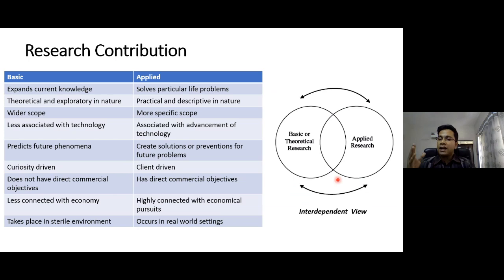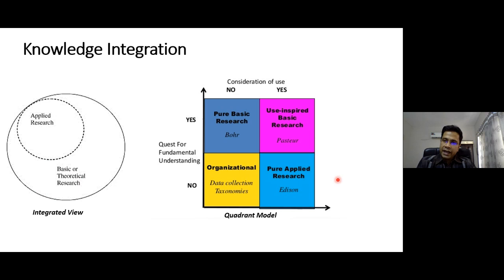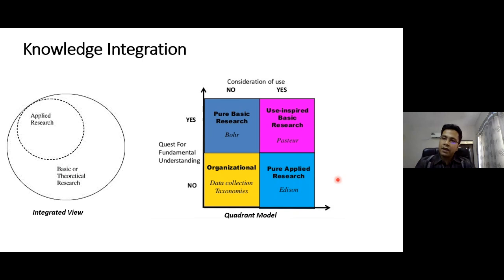That separation is the paradigm shift I'm discussing with respect to education systems — it needs to be changed. We have to integrate our knowledge properly. One of the best ways is through an integrated view, understanding that applied research practically lies within the complete scope of basic or fundamental research. We need to foresee what problems are coming in the future and integrate knowledge accordingly. One of the most common models available for this is Pasteur's Quadrant model.